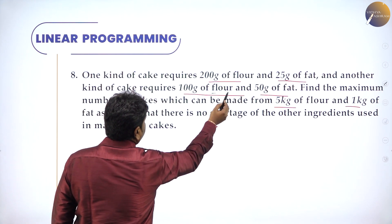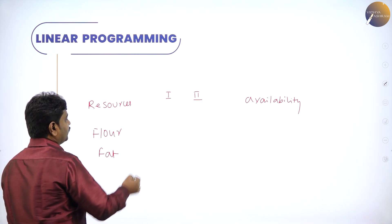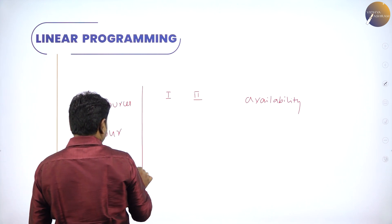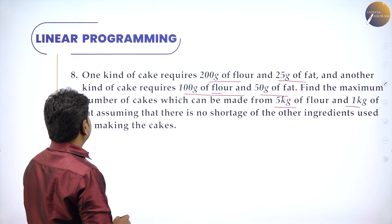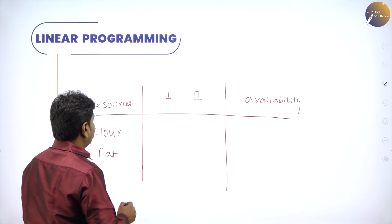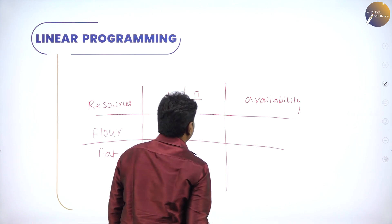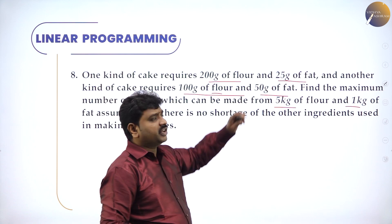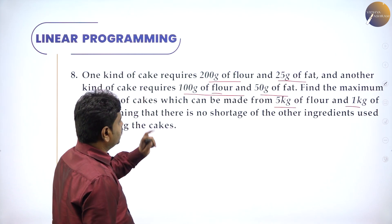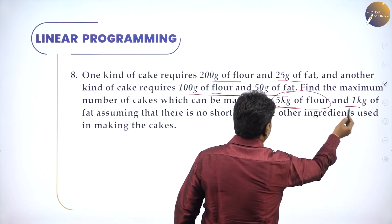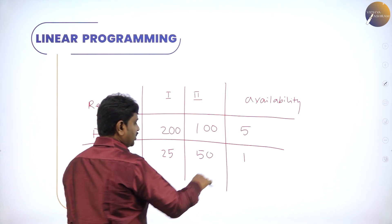The cake consists of flour and fat — these are the two ingredients. They also gave availability for each kind. Type 1 requires 200 grams of flour and 25 grams of fat. Type 2 requires 100 grams of flour and 50 grams of fat. Availability: we have 5 kg of flour and 1 kg of fat. This is the availability — this much we have.